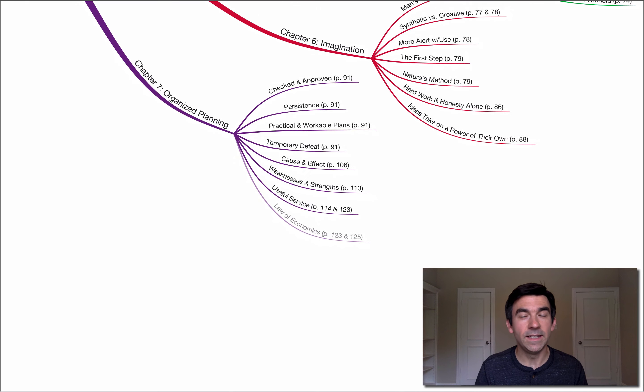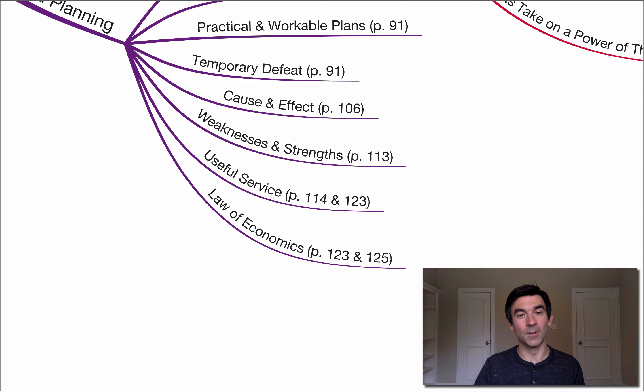Last point here in this chapter on organized planning is law of economics. And the last point really bleeds well into this point. I'm at the bottom of page 123 here. Napoleon suggests that there is a principle known as the law of economics. This is more than a theory. It is a law no man can beat. Mark well the name of this principle and remember it because it is far more powerful than all the politicians and political machines.